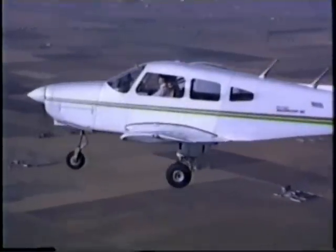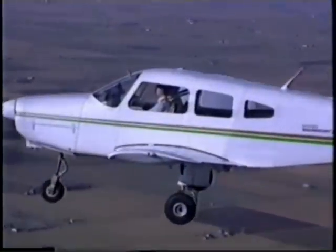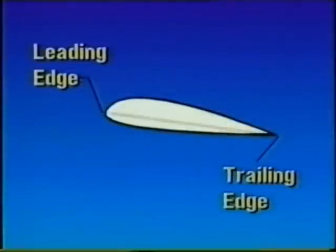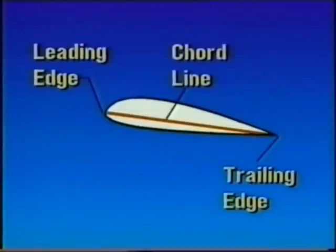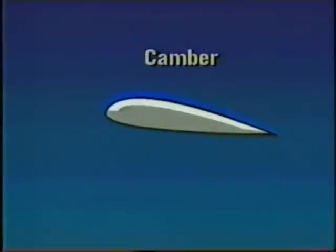Before we get into the principle that explains how lift is created, let's look at some of the terminology used in this section. A line drawn from the leading edge to the trailing edge of an airfoil is referred to as the chord line. The camber of an airfoil is the curve of its surface. On general aviation training aircraft, the upper camber is usually more pronounced than the lower camber.